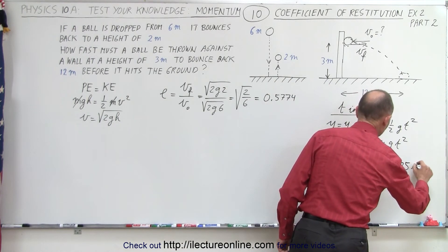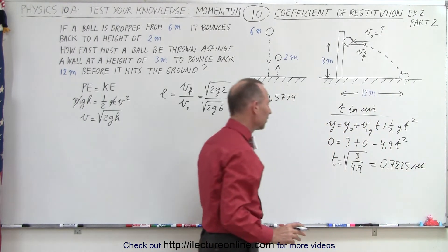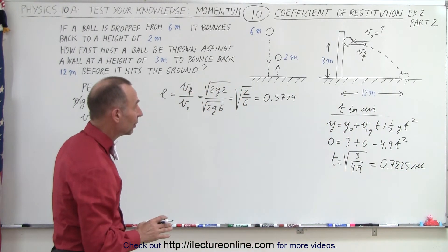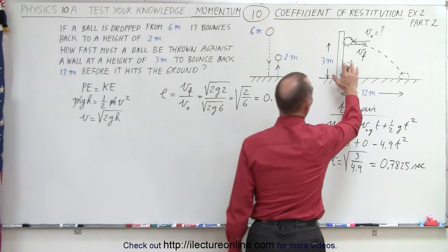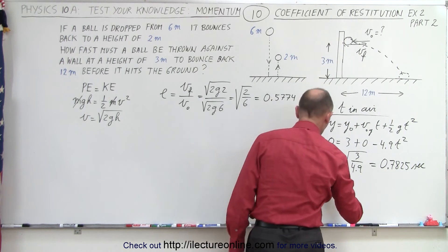0.7825. And that would, of course, be seconds. All right. Now that we have the time in the air, we can calculate the final velocity that it must leave the wall with to reach the distance of 12 meters.